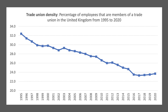The latest data, which is good data to have available in your mind, is that about 24-25% of people in work are members of a trade union. So only one person in four is a member of a union, compared to about a third back in 1995.